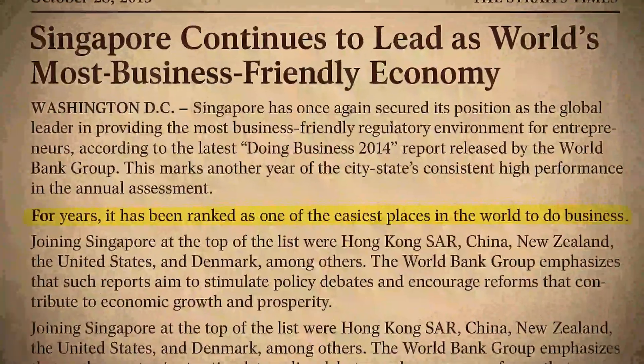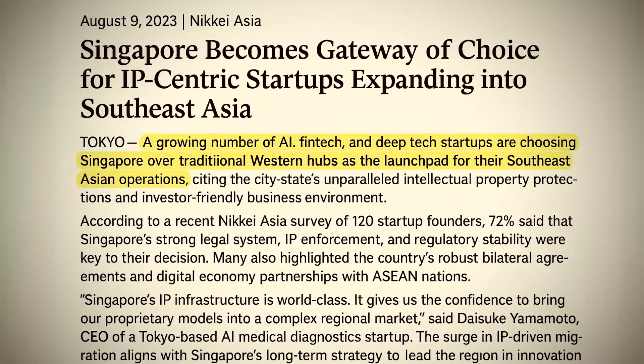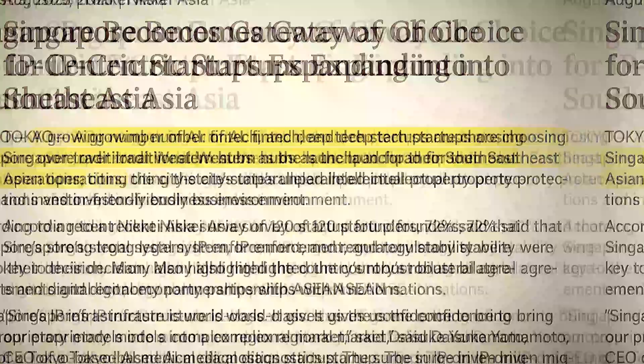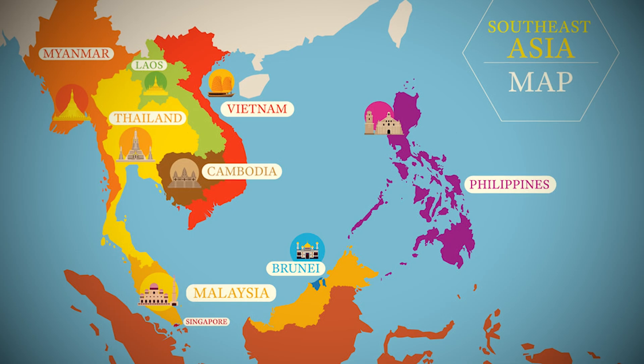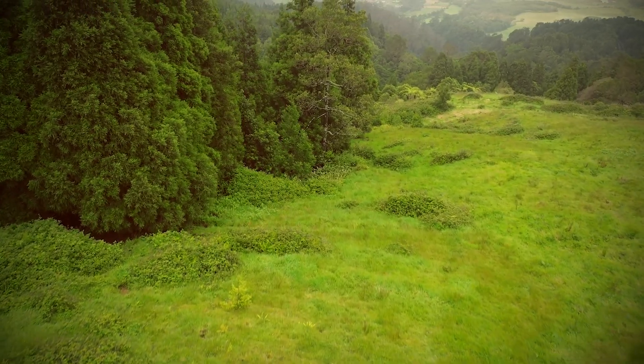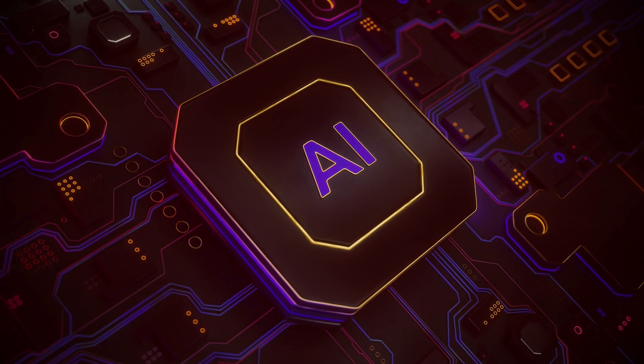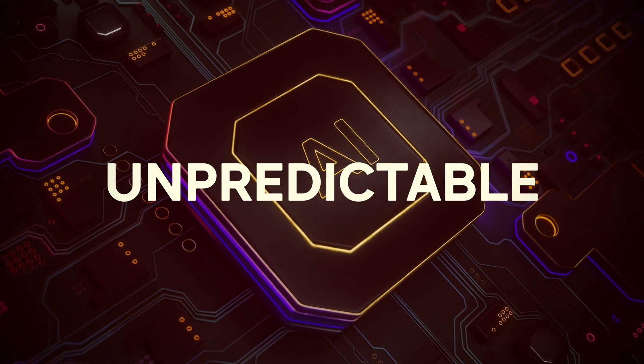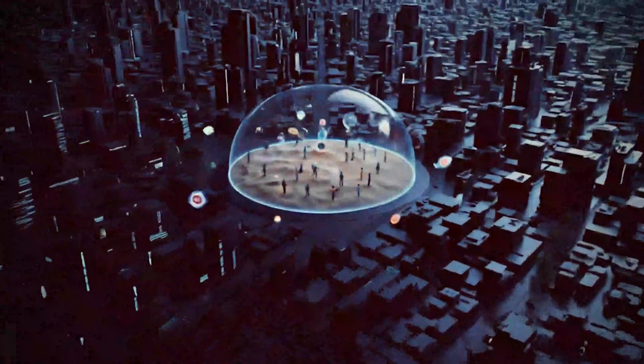For years, it has been ranked as one of the easiest places in the world to do business. The laws are stable, intellectual property is fiercely protected, and it serves as the perfect, secure gateway to the booming Southeast Asian market of over 650 million people. This created the fertile ground, the perfect foundation. But for AI, they needed to go a step further. They recognized that AI development is often messy and unpredictable. New technologies frequently clash with old regulations. So what did they do? They created sandboxes.